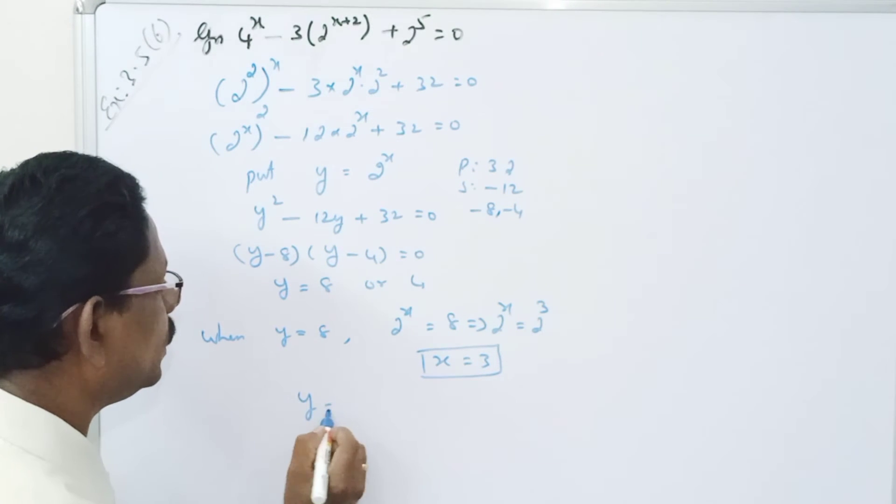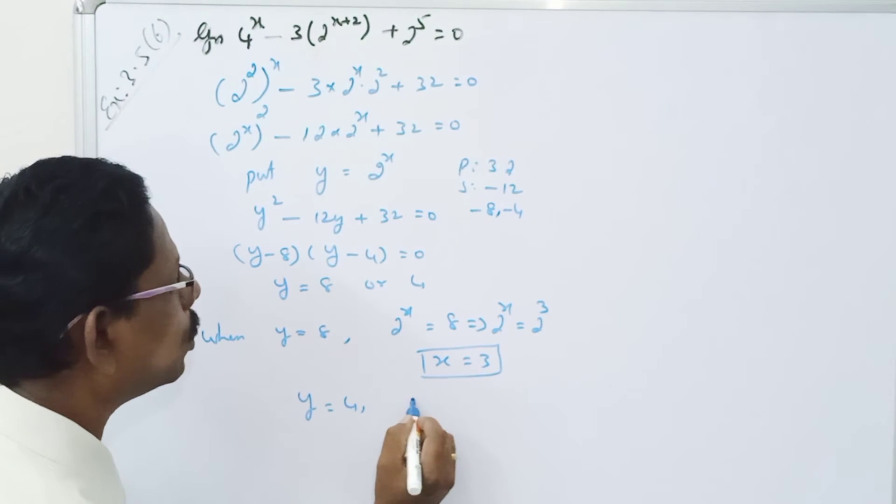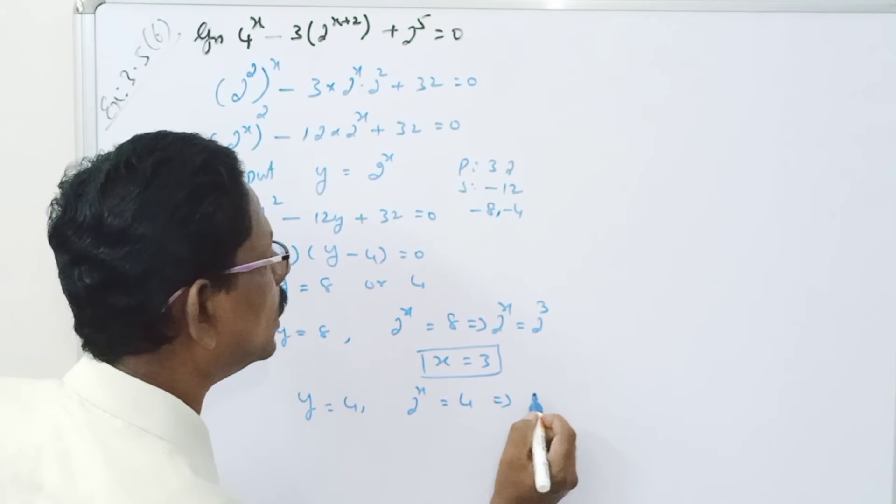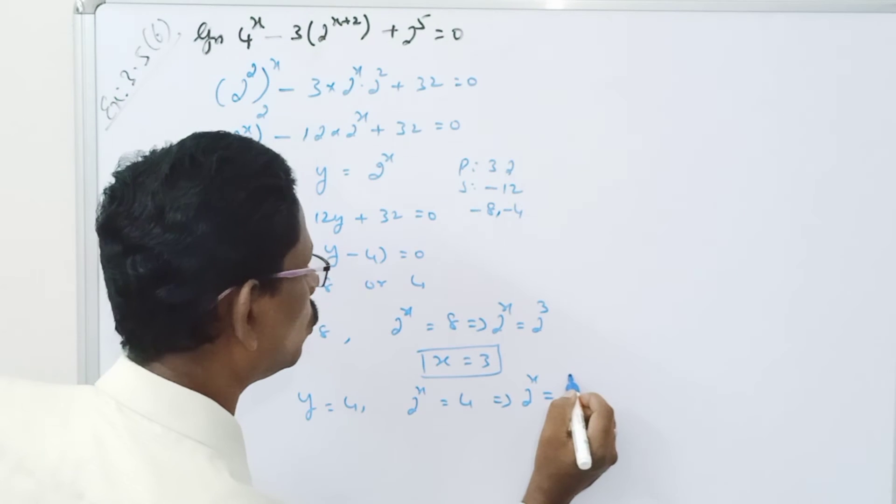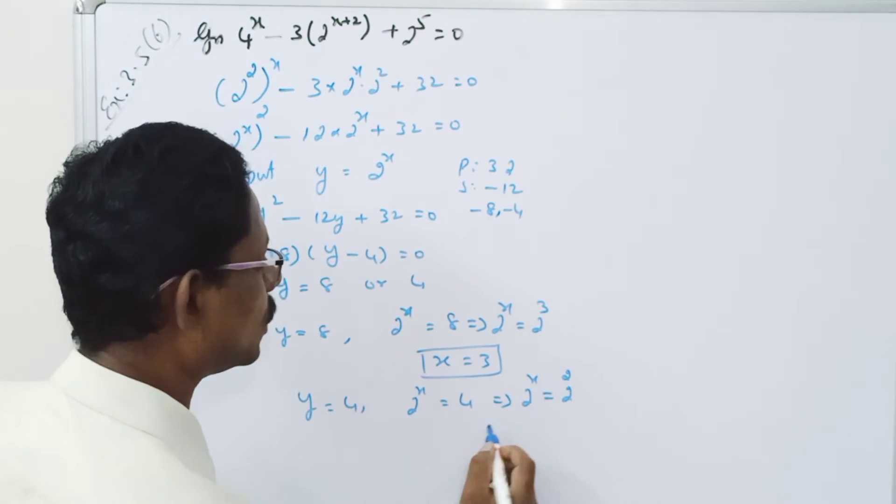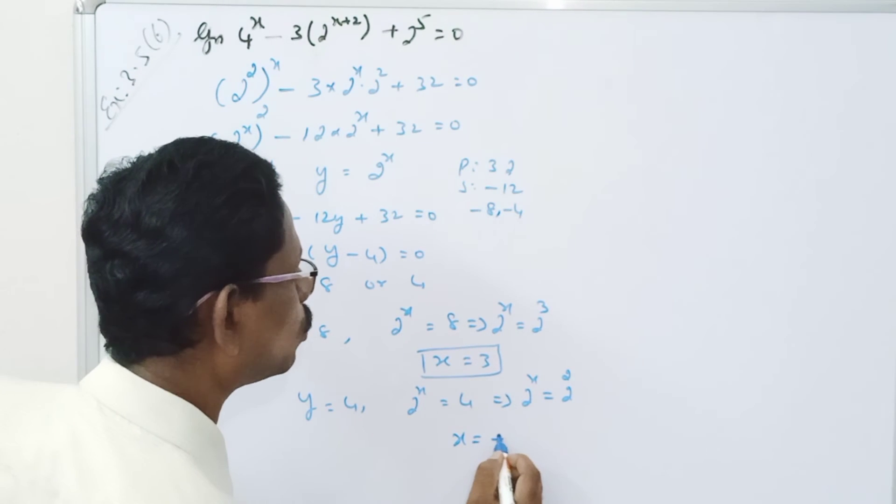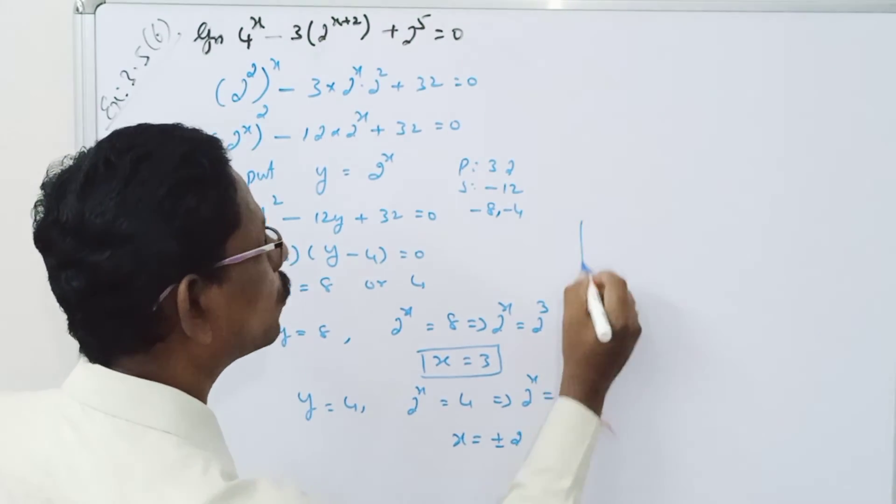When y equals 4, 2 to the power x equals 4 implies 2 to the power x equals 2 squared. Therefore, x equals plus or minus 2.